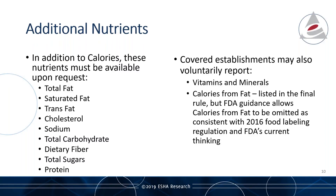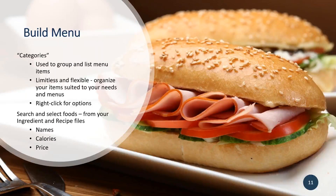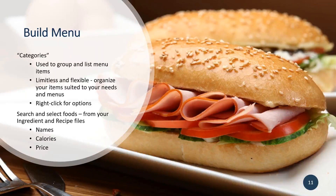Genesis R&D can report all of these nutrients, so let's take a closer look at some of the options you'll encounter with the menu label features. When working with the menu label features, you can establish categories to help organize your menu items — examples include entrees, beverages, desserts, combo meals, and kids meals. Similar to building recipes in Genesis, you search through the database to select items to include on your menu. Prior to building your menu, you may need to add supplier ingredients and build recipes for dishes and combo meals.